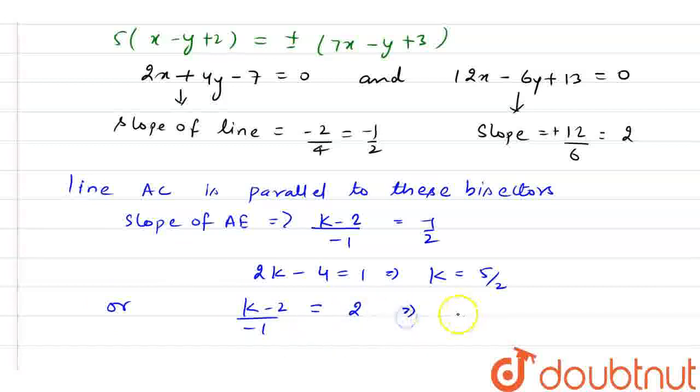Or (k - 2) / (-1) = 2. And we have the value of k as k - 2 = -2. So the value of k is 0.